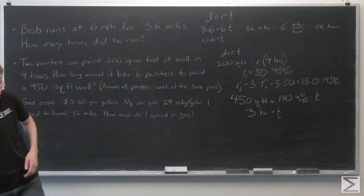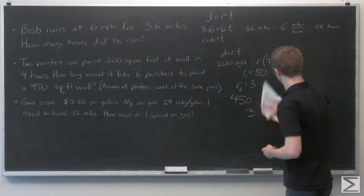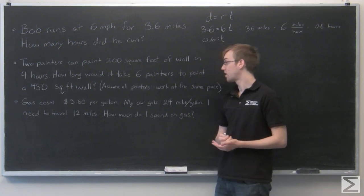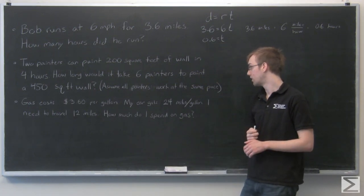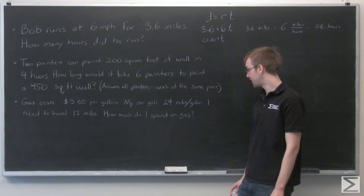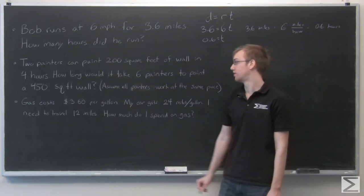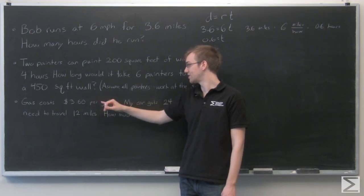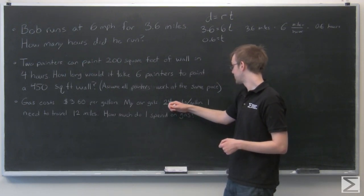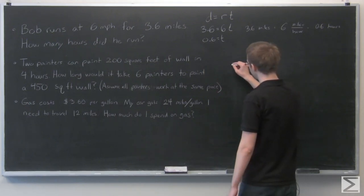For the last problem, I'm going to give myself a little bit more room. Gas costs $3.60 per gallon. My car gets 24 miles per gallon. I need to travel 12 miles. How much do I spend on gas? Now looking at this problem, I actually see two rates. There's $3.60 per gallon, that's dollars per gallon, and my car which gets 24 miles per gallon.